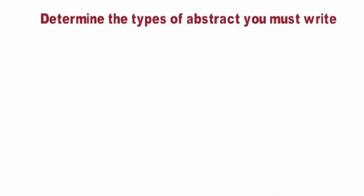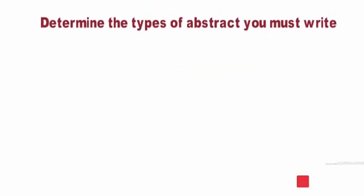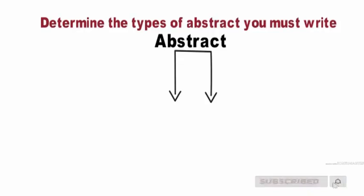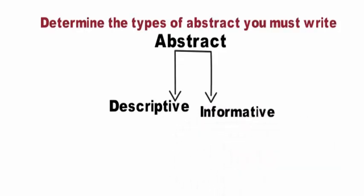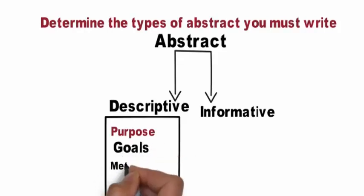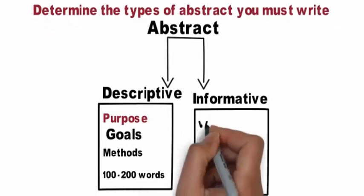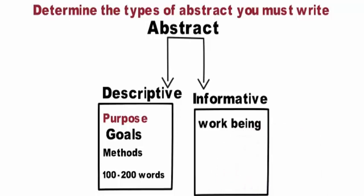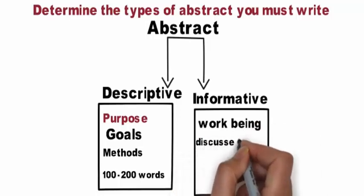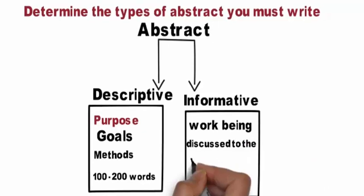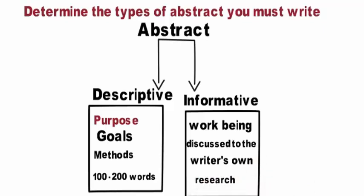Determine the type of abstract you must write. Although all abstracts accomplish essentially the same goal, there are two primary styles of abstract: descriptive and informative. Descriptive abstracts explain the purpose, goals, and methods of your research but leave out the results section. These are typically only 100 to 200 words. Informative abstracts are like a condensed version of your paper, giving an overview of everything in your research, including the results. These are much longer than descriptive abstracts and can be anywhere from a single paragraph to a whole page long.